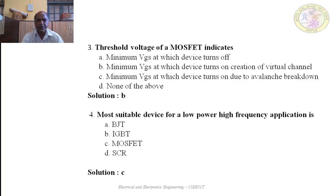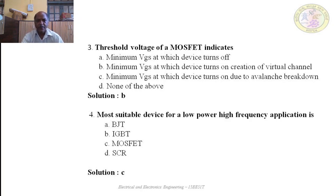Question 3: Threshold voltage of a MOSFET indicates which one? Options: A — minimum VGS at which device turns on; B — minimum VGS at which device turns on with creation of a virtual channel; C — minimum VGS at which device turns on due to avalanche breakdown; D — none of the above. The correct answer is B — minimum VGS at which device turns on and creation of a virtual channel.